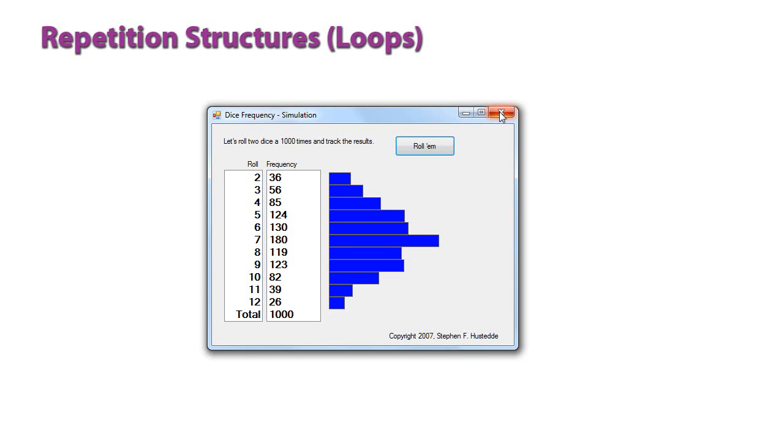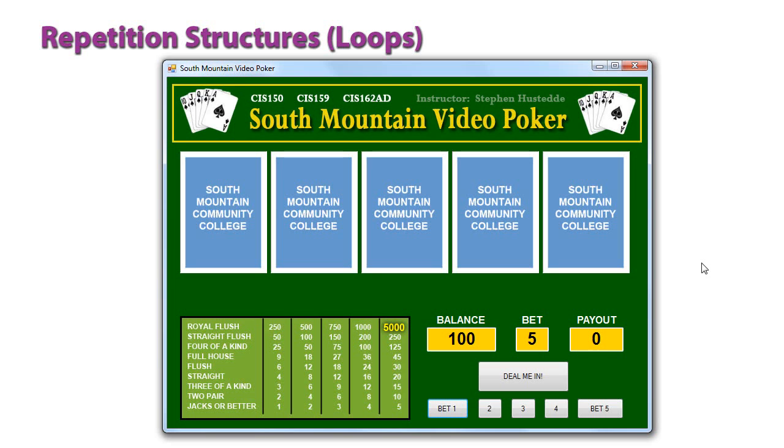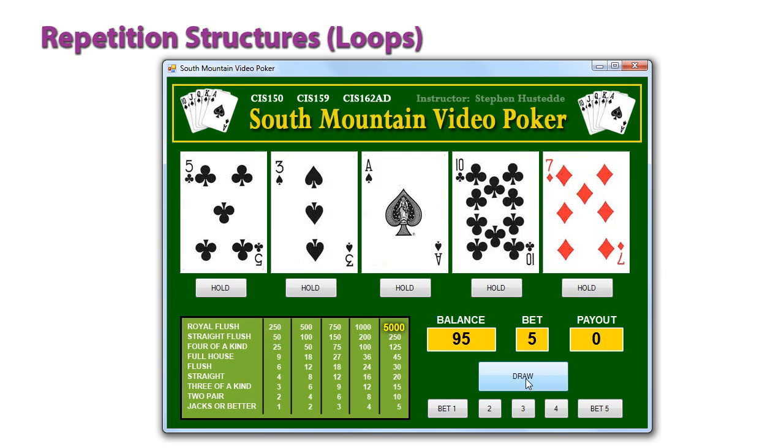We might use a loop in a video poker game to shuffle the deck along with that random class. So I'm using random.next to shuffle the deck within a loop so each time I would get different cards.